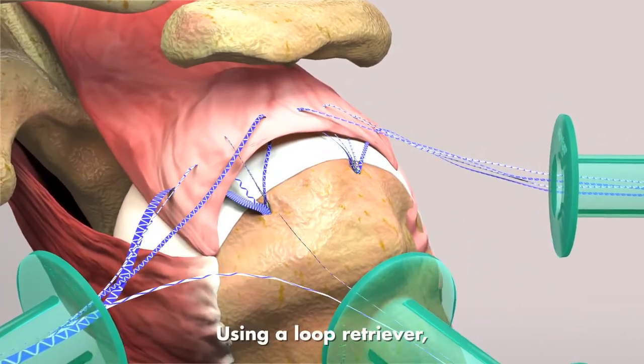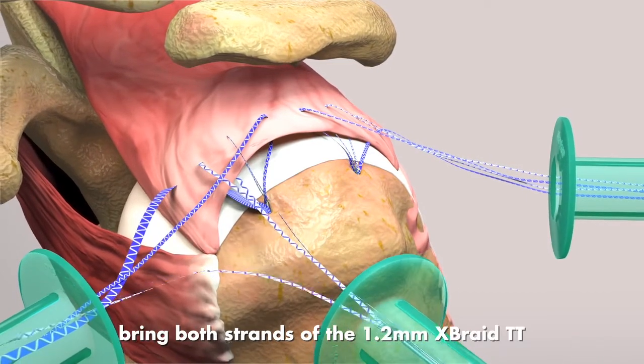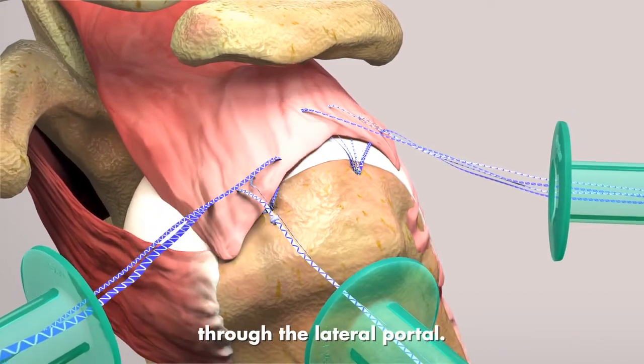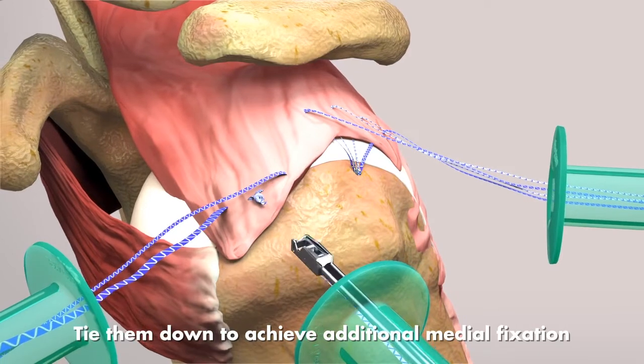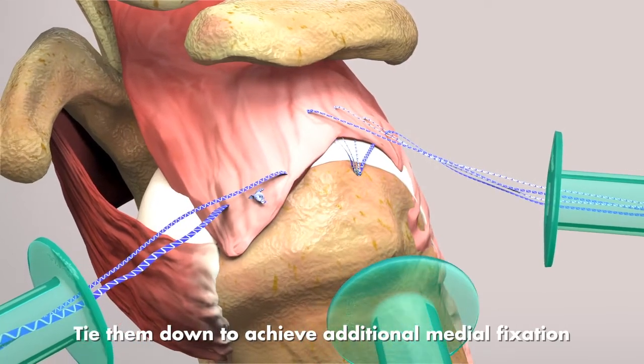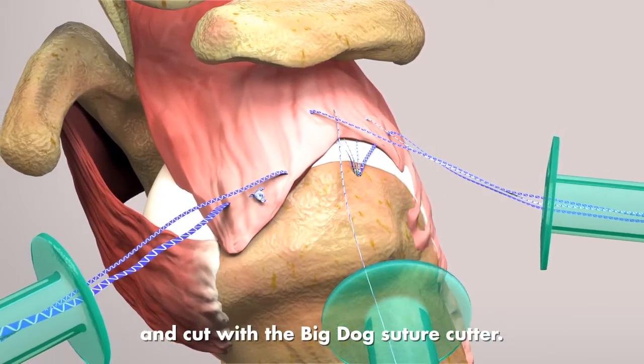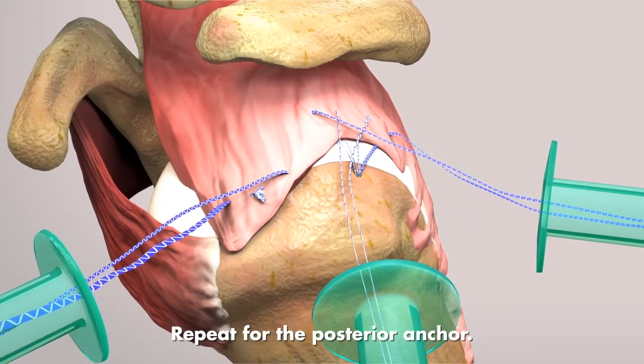Using a loop retriever, bring both strands of the 1.2mm X-Braid TT through the lateral portal. Tie them down to achieve additional medial fixation and cut with the big dog suture cutter. Repeat for the posterior anchor.